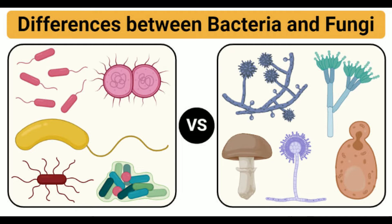Fungi can either be free-living or might exist in a parasitic or symbiotic relationship with other organisms. Because fungi are eukaryotic organisms, they have a distinct nucleus surrounded by a nuclear membrane. These are separated from plants on the basis of the presence of chitin in the cell wall and the absence of chlorophyll. They also have multiple cell organelles like mitochondria, vesicles, and 80S ribosomes. Most fungi grow in the form of a long, elongated thread-like structure called hyphae, which can be either septate or aseptate.